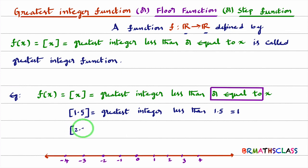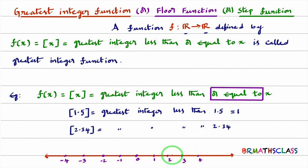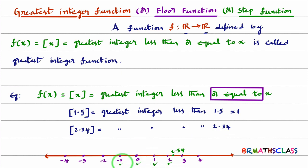What is step 2.34? It means the greatest integer less than 2.34. You identify where 2.34 is on the number line — this is 2.34. Now mark all integers less than 2.34: 2, 1, 0, and so on. In these integers, which one is greatest? 2 is the greatest. So step 2.34 is 2.